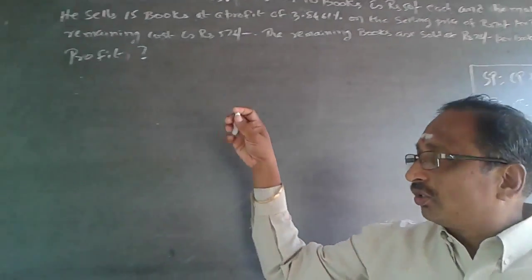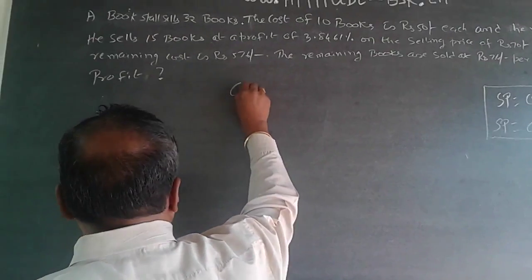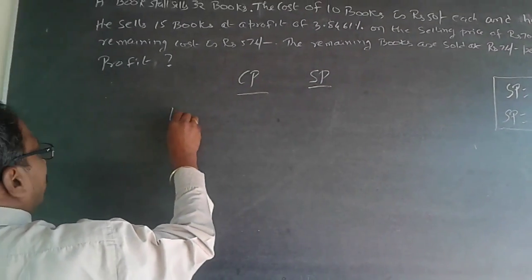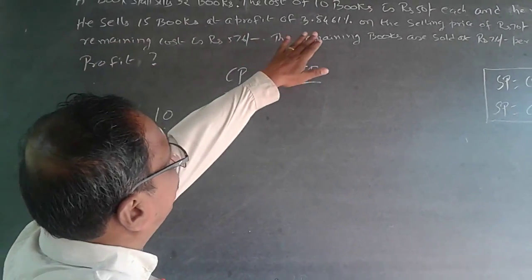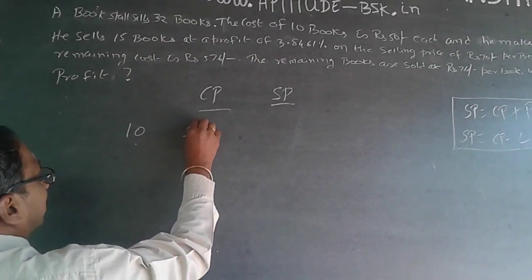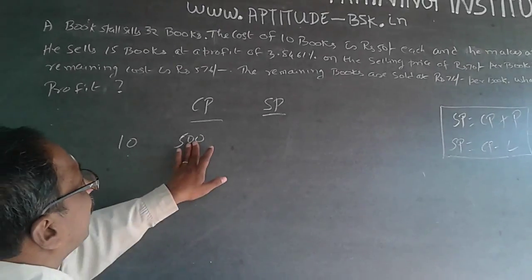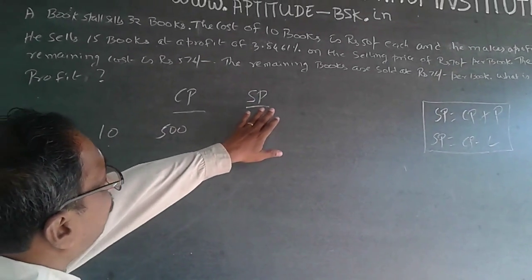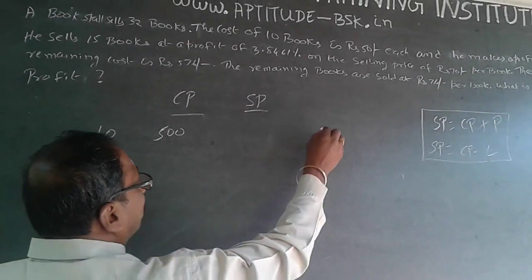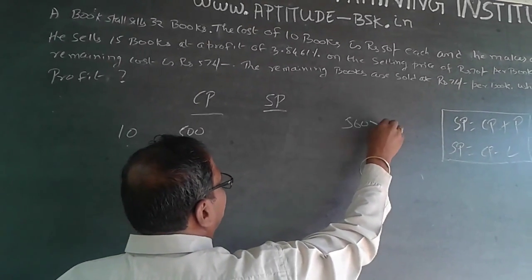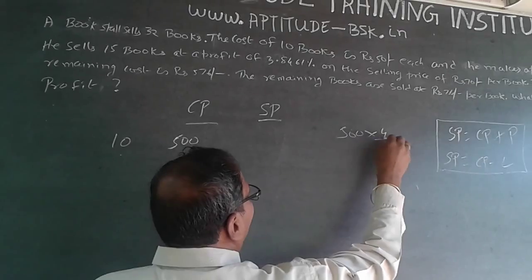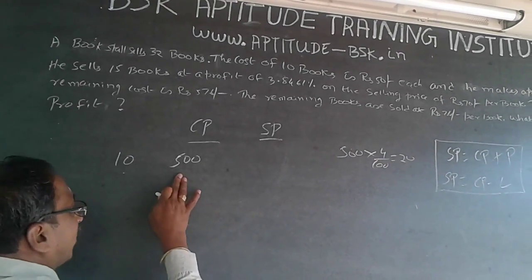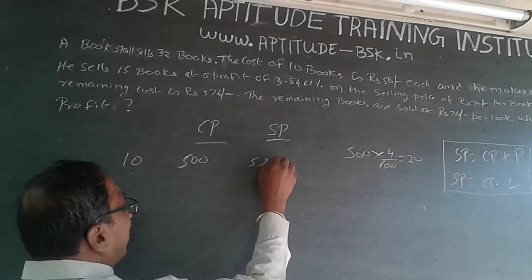For the 10 books, the cost price is given as Rs. 50 per book, so 10 × 50 = Rs. 500. He is making a profit of 4 percent, so 4 percent on 500 = 500 × 4/100 = Rs. 20 profit. Therefore the selling price of the 10 books will be Rs. 520.